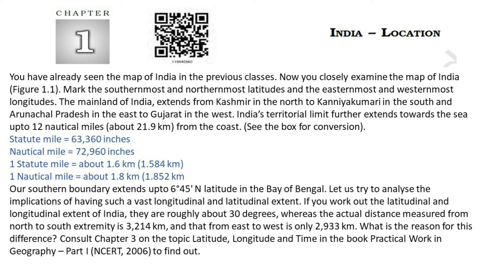Mark the southernmost and northernmost latitudes and the easternmost and westernmost longitudes. The mainland of India extends from Kashmir in the north to Kanyakumari in the south, and Arunachal Pradesh in the east to Gujarat in the west. India's territorial limit further extends towards the sea up to 12 nautical miles, about 21.9 km, from the coast. Our southern boundary extends up to 6.45 degrees latitude in the Bay of Bengal.